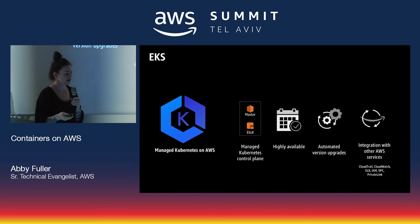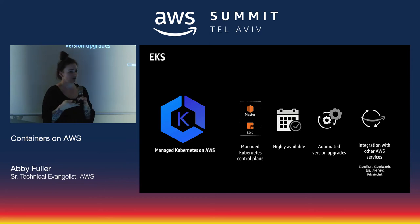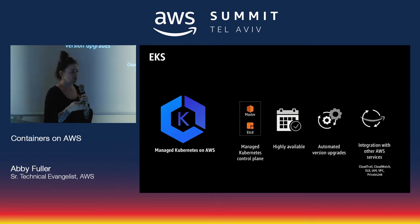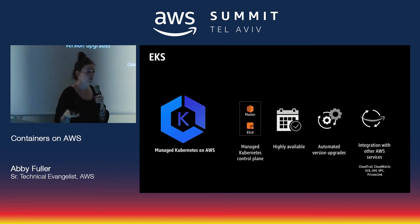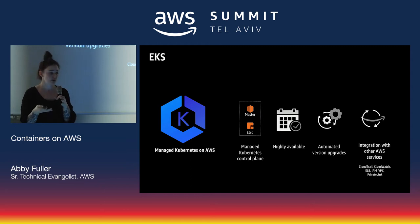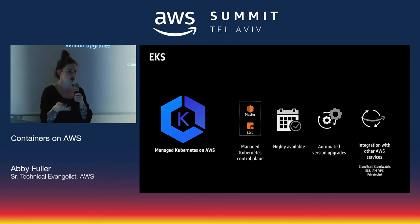Then you have EKS, which was announced at re:Invent 2017 — managed Kubernetes for AWS. It manages the Kubernetes control plane and helps with things like high availability and optional version upgrades. It is just regular Kubernetes, managed on AWS — not special AWS Kubernetes. AWS will contribute changes back upstream, including things like the CNI plugin, so other people can use them. Part of what makes Kubernetes attractive is the community, and AWS wants to be part of that.